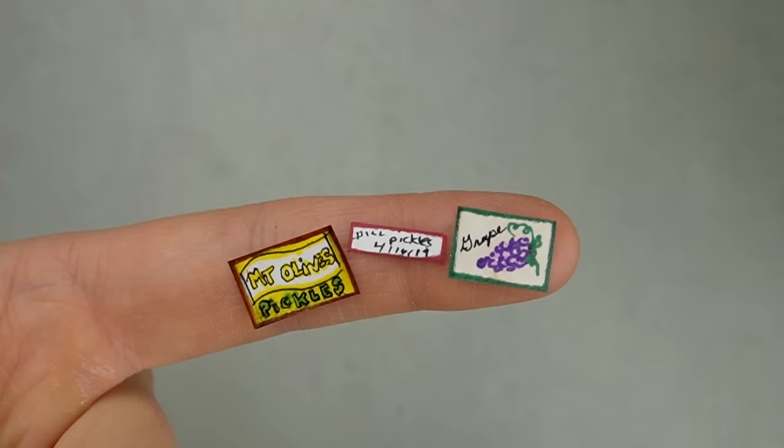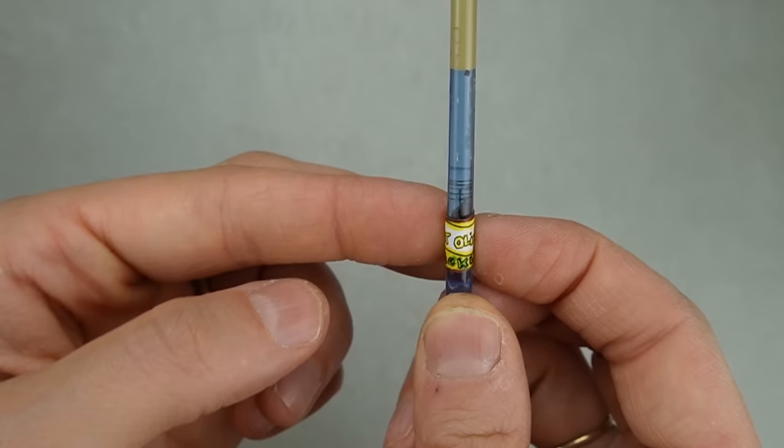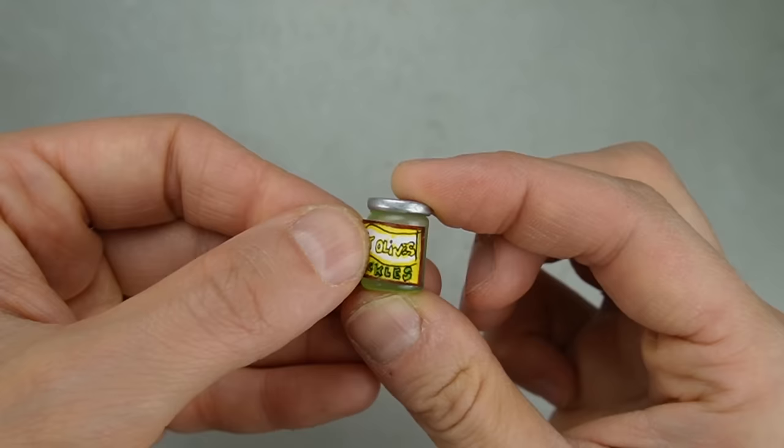I used some diamond glaze to protect the paper labels and make them a little shiny. Before gluing on the labels I gave them a slight curve on a paintbrush.